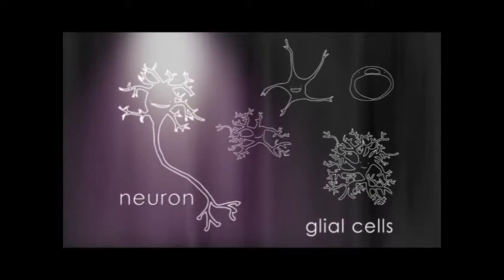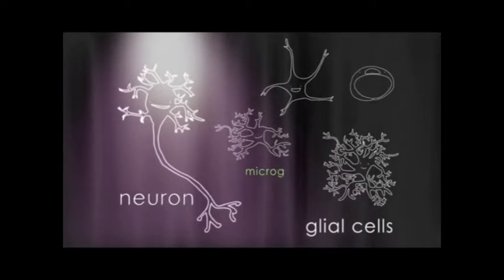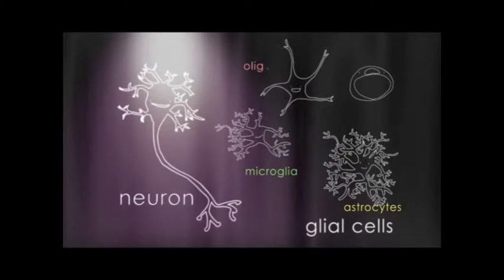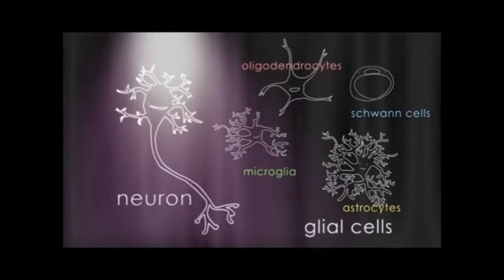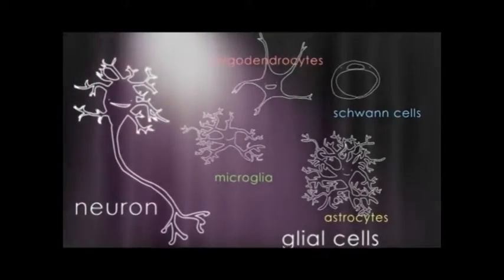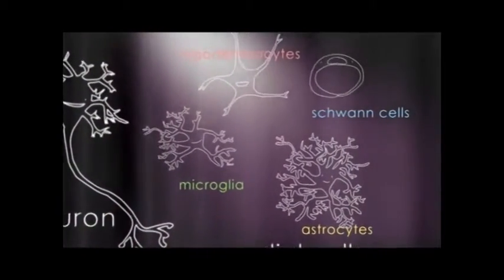The central nervous system and the peripheral nervous system have many various types of glia that help the neurons function properly, but because we don't have much time, we'll just talk about a few of the most prevalent glial cells in the nervous system.